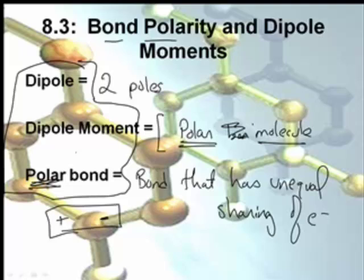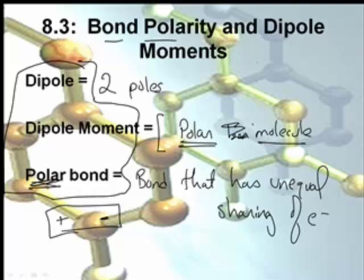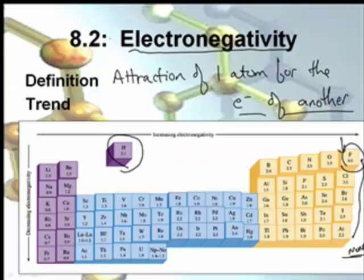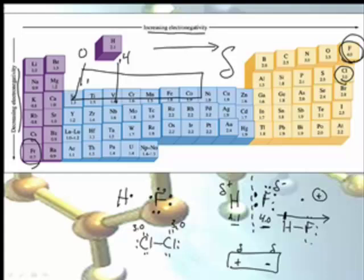And so a polar bond has unequal sharing of electrons. And how do you know if you have a polar bond? You have to have an electronegativity difference. You have to use this table here. So let's actually make a little chart. If you have an electronegativity difference between 0 and 0.4, it's considered a nonpolar bond. Because what's the difference between 3 and 3? Zero. So that's nonpolar.